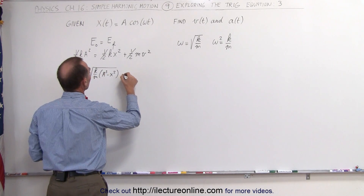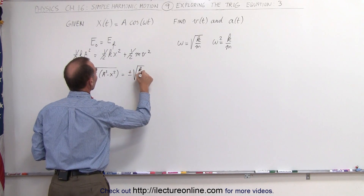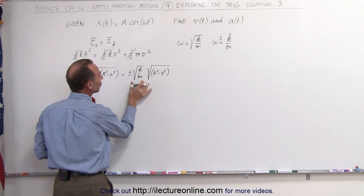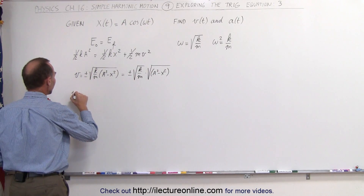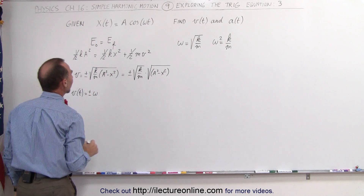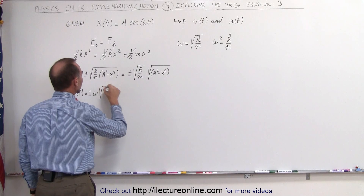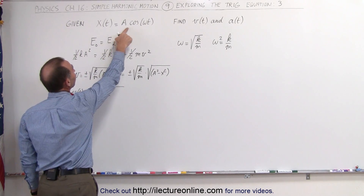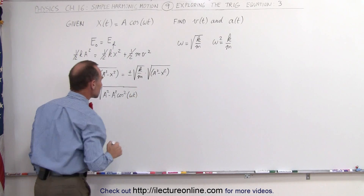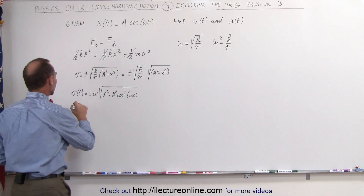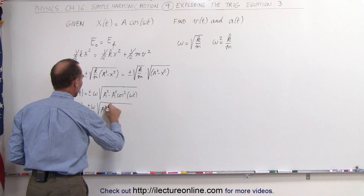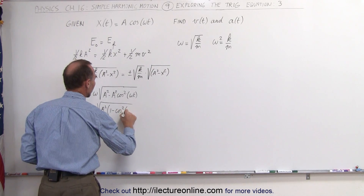Or we can separate this: it can be written as plus or minus the square root of k over m times the square root of the quantity A squared minus x squared. Then you can see that this could simply be written as omega. So V as a function of time is equal to plus or minus omega times A squared minus x squared. This can now be written as the square root of A squared minus x, which is A times the cosine of omega t, giving A squared times the cosine squared of omega t. You can factor out an A squared, so this becomes V of t equals plus or minus omega times the square root of A squared times the quantity 1 minus cosine squared of omega t.